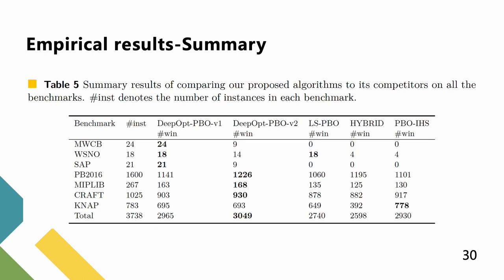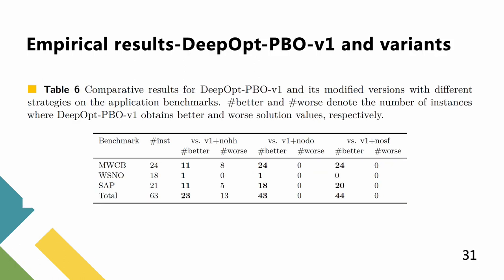To verify the effectiveness of the proposed strategies, we compare DeepOPT-PBO version 1 with three alternative versions. The first version utilizes the age strategies instead of HHSCAR. The second version doesn't use the DeepOPT method. The third one doesn't employ the sample flip function. The results in Table 6 demonstrate that all proposed strategies are effective.